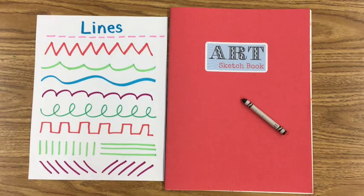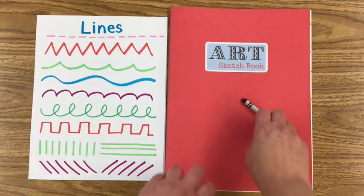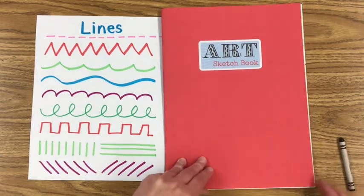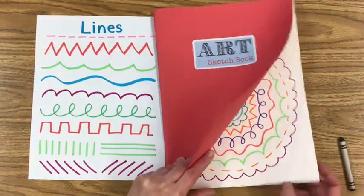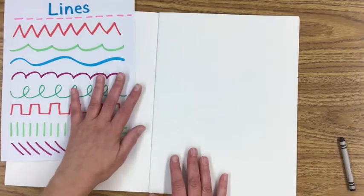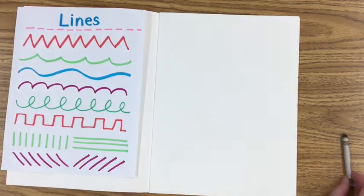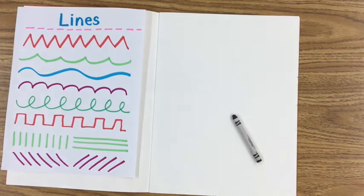Today we're going to be using the lines that we know to create a line landscape. A landscape is a picture of land. You will need a black crayon and your sketchbook. Let's turn to a clean piece of paper in your sketchbook. I'm going to put my list of lines right here to remind me of the lines that I want to use, and I want to include all of these lines in my landscape.